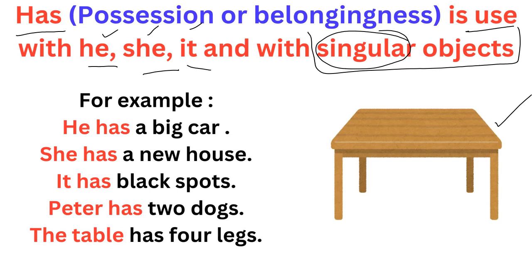Has also comes with possession and belongingness. Like, 'this is mine', 'this is yours' — yeh mera hai, yeh aap ka hai. So has is used with he, she, it, and with the singular objects.